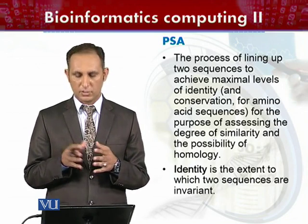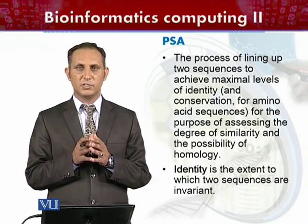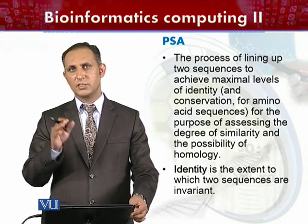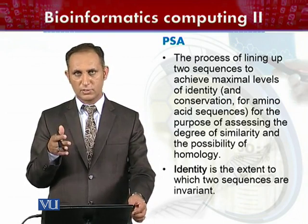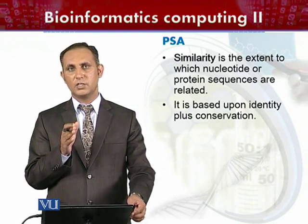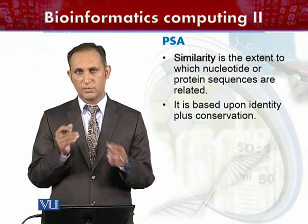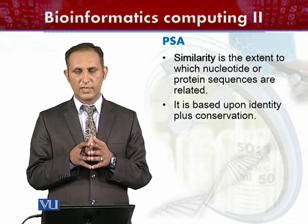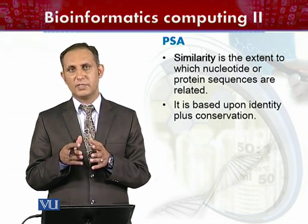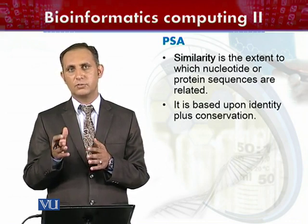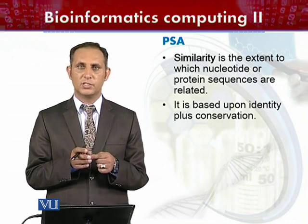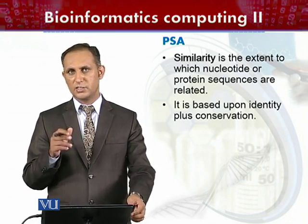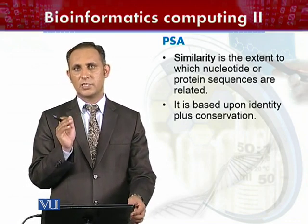Identity is basically the extent to which two sequences are invariant from each other — that is, how much two sequences are identical to each other. After sequence alignment, we obtain percent identity. Similarity is the extent to which nucleotide or protein sequences are related to each other. After alignment we measure the similarity score, and similarity is based upon identity plus conservation.